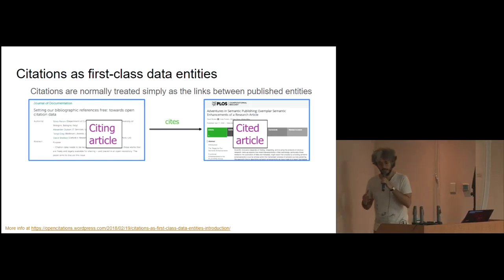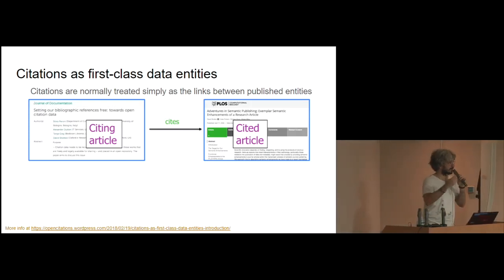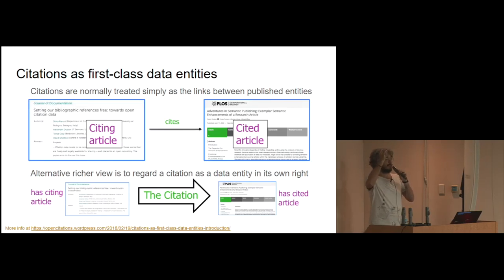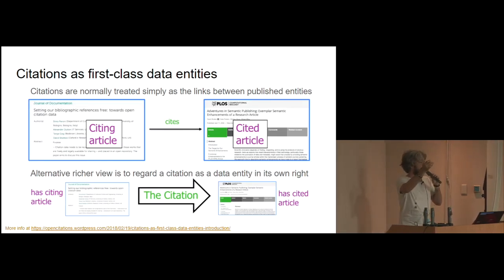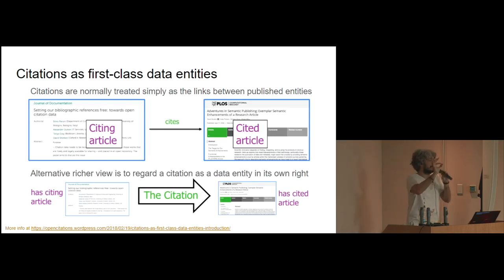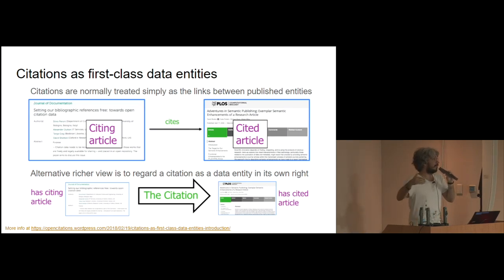Our idea is that citations are more than simple links between the citing article and the cited article — they actually are proper first-class entities. So there is the concept of something in the database that is the citation, and it has attributes. One of these attributes is 'has citing entity' — the citing article. Another attribute is 'has cited article.' We also add additional information to the citation itself, for instance to mark the citation if it is a self-citation, an author self-citation where an author is citing themselves.